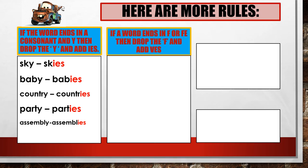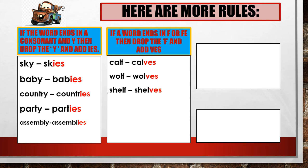If a word ends in F or FE, then drop the F and add VES. Here are some examples: one calf, many calves. One wolf, many wolves. One shelf, many shelves. One loaf, many loaves. One knife, many knives. One thief, many thieves.